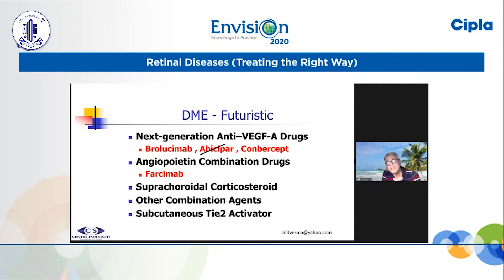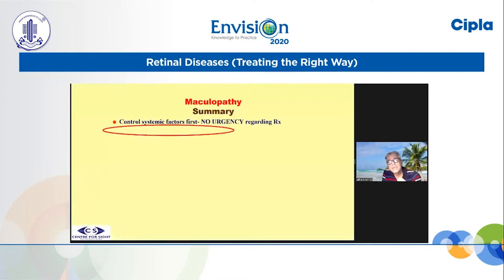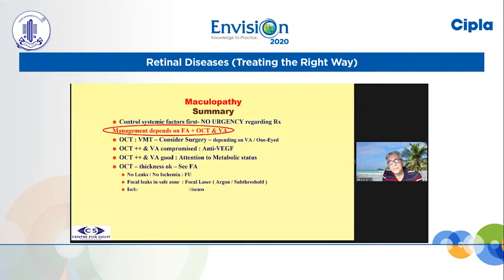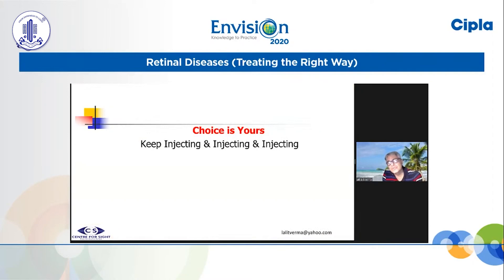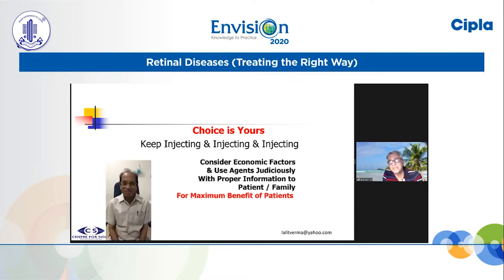A lot of new drugs are coming up. Dinesh mentioned brolucizumab — I am sure this will be tried in diabetic patients also. Faricimab is an angiopoietin combination drug coming up and into phase 3 trials. Just to summarize: do not lose sight of the fact that it is a systemic disease — control systemic factors. Unlike AMD, there is no urgency. Management depends on combination of vision, FA, and OCT. We have to make a very judicious choice between all agents, and not only keep injecting. This will help maximize visual potential and benefit for these patients. Thank you very much.